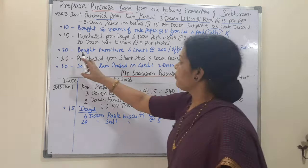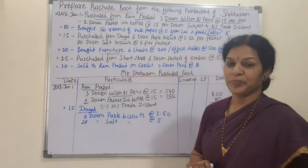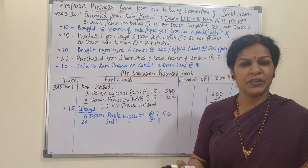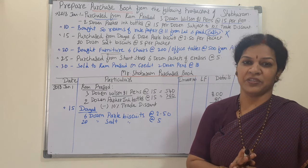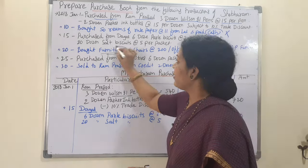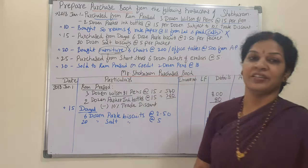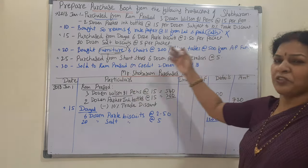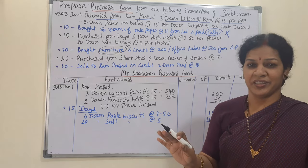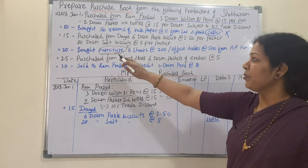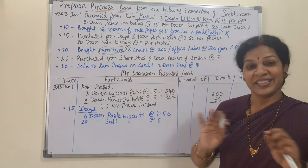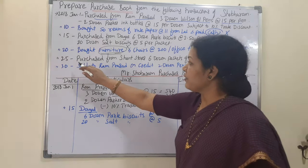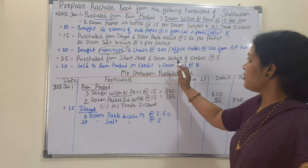On the 20th: bought furniture. Since this is an asset purchase — not goods — it does not come in the purchase book. I already told you we take only goods purchased. So we ignore this transaction entirely.